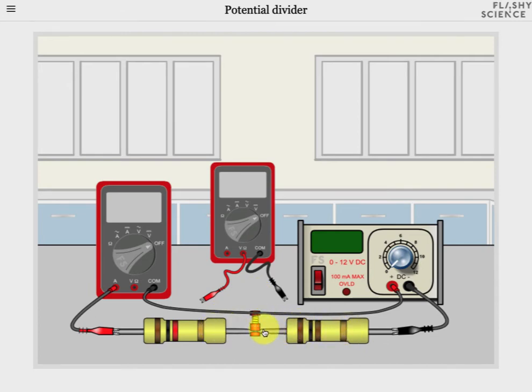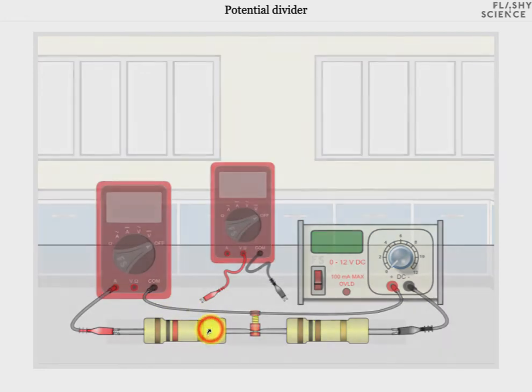The resistors are connected in series via this junction and the different band colors on the resistors code for their resistance values. Now we can change these simply by clicking on a resistor to move to the Resistor Select screen.